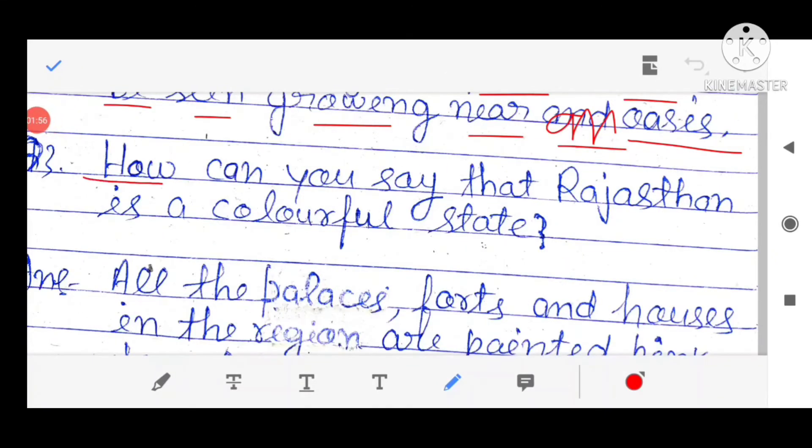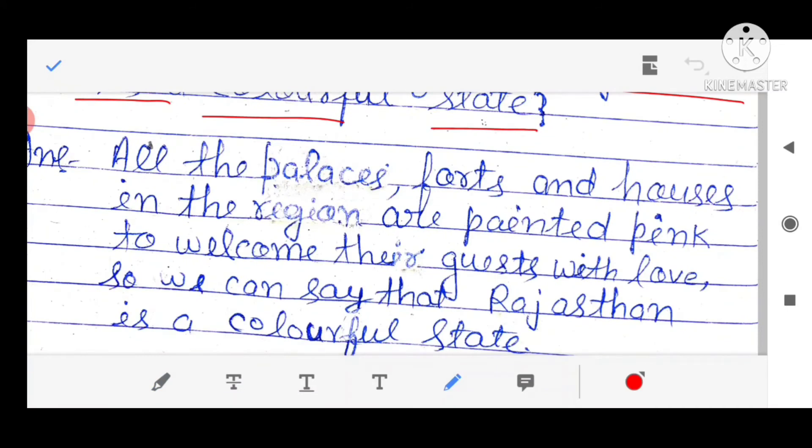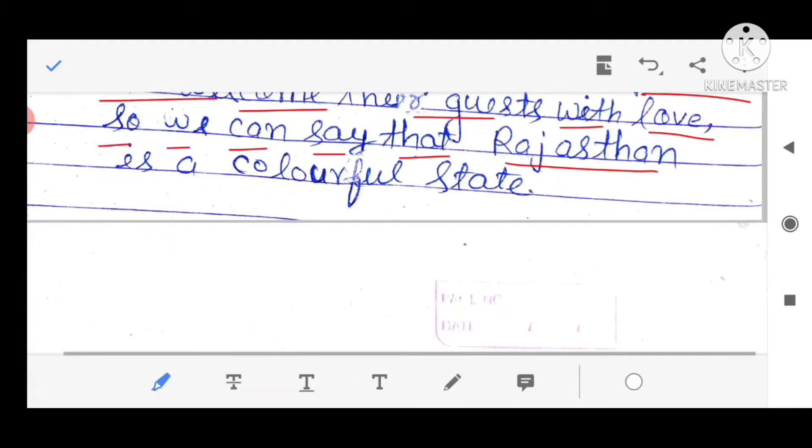Question 3. How can you say that Rajasthan is a colorful state? All the villages, forts and houses in the region are painted pink to welcome their guests with love. So we can say that Rajasthan is a colorful state.